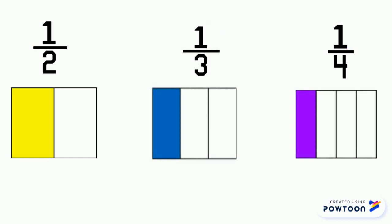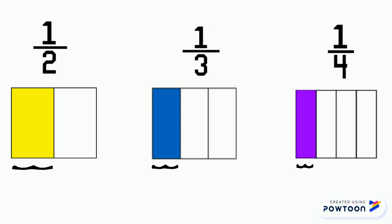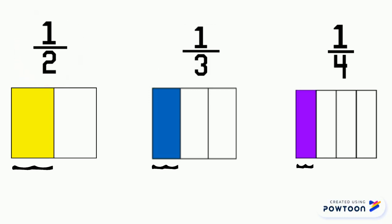The key idea is to see that as the denominator gets bigger, the size of the fraction gets smaller, which you can see in our visual models. The reason the size gets smaller is that the more you have to divide up a whole, the smaller the pieces become. So we see that one half is the biggest fraction. The thing to remember is that the smaller the denominator, the bigger the fraction.